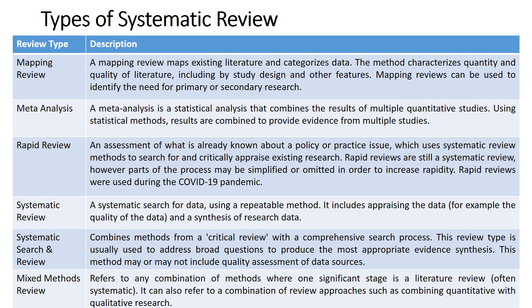When we talk about meta-analysis, a meta-analysis is a statistical analysis that combines the results of multiple quantitative studies using statistical methods, and the results are combined to provide evidence from multiple studies. One very important term is rapid review. At the time of COVID-19, during the pandemic, we used this kind of review — rapid reviews — which is an assessment of what is already known about a policy or practice issue, using systematic review methods to search for and critically appraise existing research.